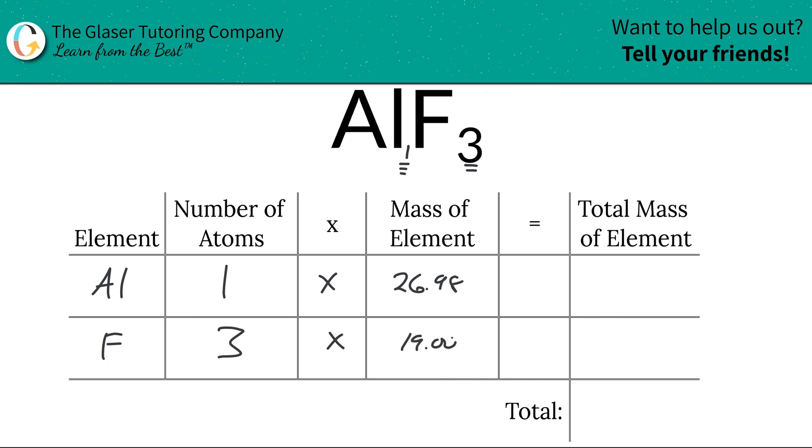Then all we have to do is simply multiply this row together to get the total mass of the element in the compound. So the total mass of aluminum is going to be 26.98, and the total mass of fluorine here will be 57, which is 19 times 3.